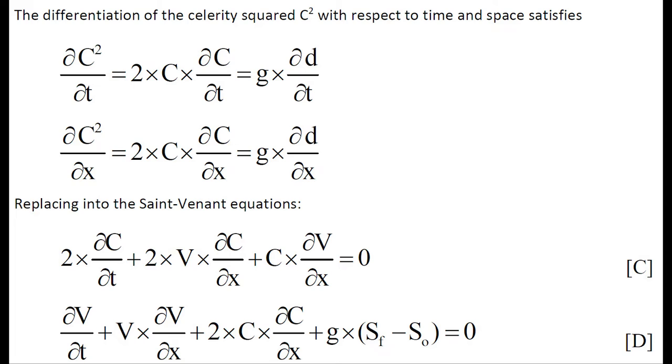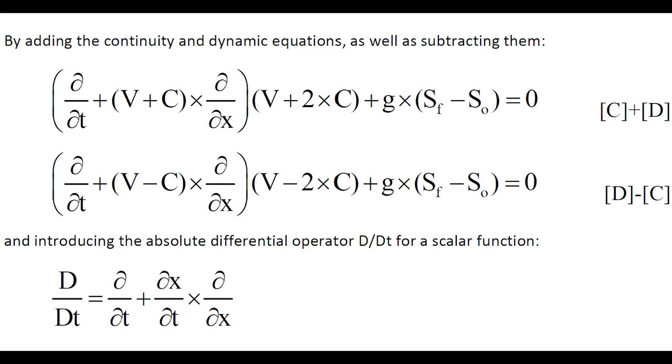Introducing the differentiation of the celerity squared with respect to time and space, we can replace this expression into the Saint-Venant equation. By adding the continuity and the dynamic equation, as well as by subtracting the continuity equation from the dynamic equation, and introducing the differential, the absolute differential operator to a scalar function.